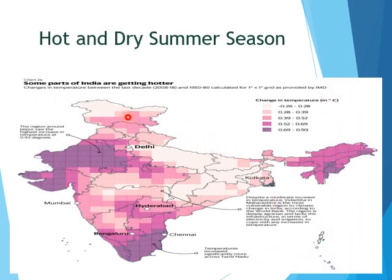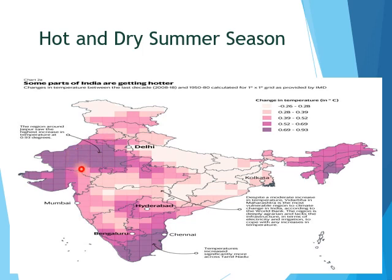First, the hot and dry summer season. The vertical rays of the sun fall directly over the Tropic of Cancer during March to May, so the length of the day increases. This results in increased solar radiation and temperatures start rising in the interior parts of the country from 30 to 32 degrees Celsius. In the north-western parts of India, temperature ranges between 48 to 50 degrees Celsius. In southern India, the hot weather is not intense due to the moderating influence of the sea, and hills are also relatively cool due to high elevation.